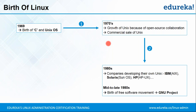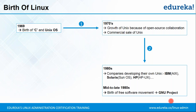In the 1980s, instead of buying Unix from AT&T, companies started developing their own Unix versions. IBM came up with AIX, Solaris came up with the Sun operating system, and HP came up with HP-UX. There were also versions like POSIX. Since there were many different flavors and dialects of Unix, it was becoming problematic because each dialect was a little different — IBM's Unix was different from HP's Unix, causing unnecessary confusion. That is when Richard Stallman came up with the GNU project.